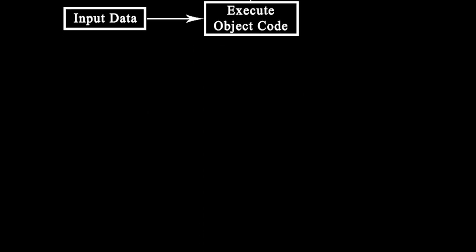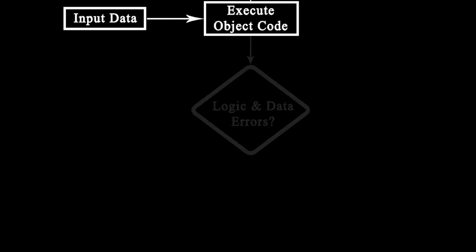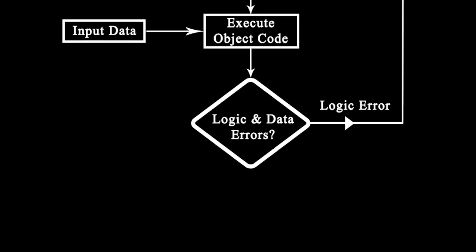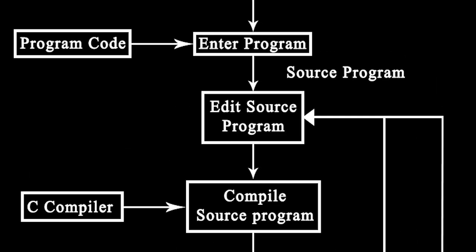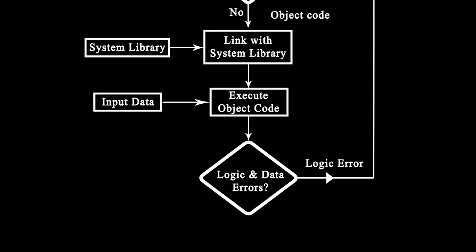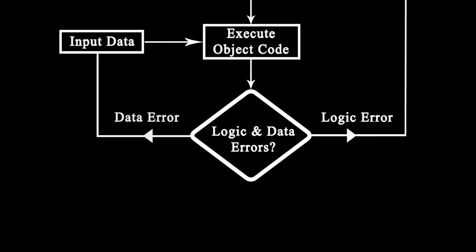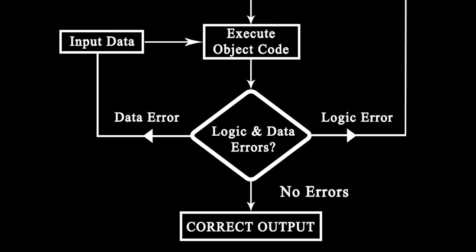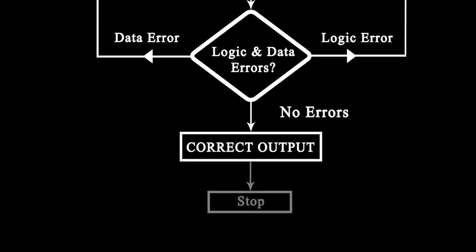While executing my code, the program will prompt me to input data and then check for logical and data errors. If there is a logical error, I'll be prompted to go back to the edit source program block and check again. If there is no logical error but a data error, I'll be prompted again to input the data and check. If there are no errors, the correct output will be printed and the program will stop.